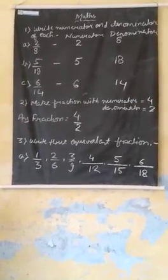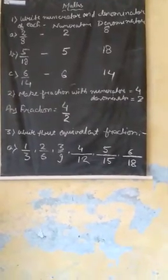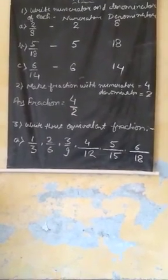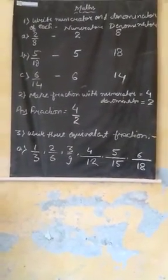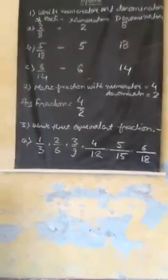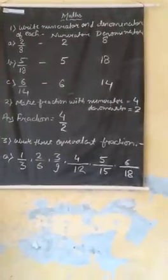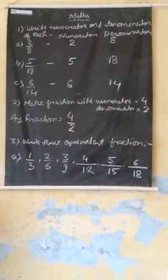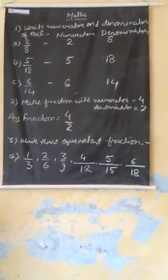Equivalent fractions: here 1 upon 3, 2 upon 6, 3 upon 9. Equivalent fractions are equal to the same number.